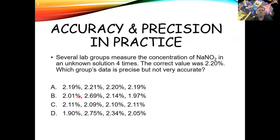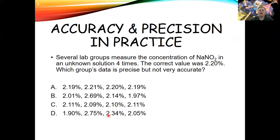The next data set: 2.01, 2.69, 2.14, 1.97. The average might be close to 2.2, so it might be accurate, but the precision is terrible — ranging from 2.01 all the way to 2.69 and down to 1.97. That's a huge range. The bottom data set has the same issue, going from 1.9 percent to 2.75 percent — a lot of range, so not very precise.